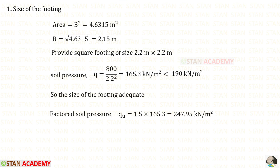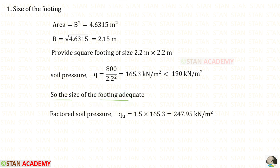We need to find the soil pressure, which equals P divided by area. P is the column load of 800 kilonewton and the area is 2.2 squared. The resulting soil pressure is less than the safe bearing capacity of the soil, so the size of the footing is adequate. We then find the factored soil pressure by multiplying by 1.5.